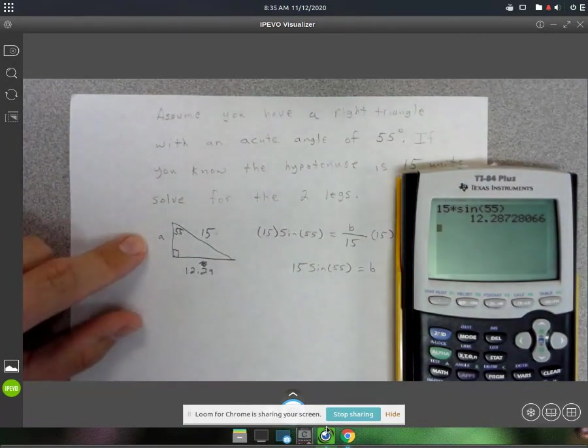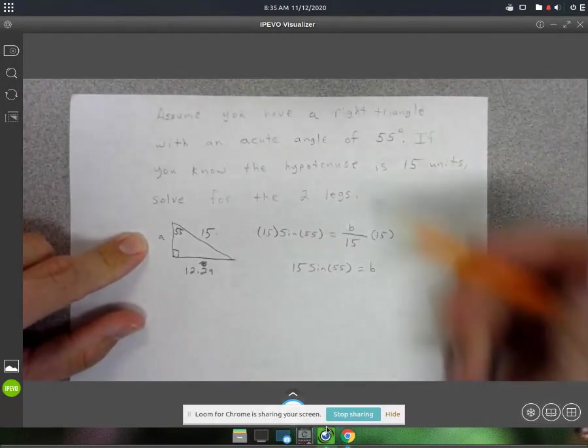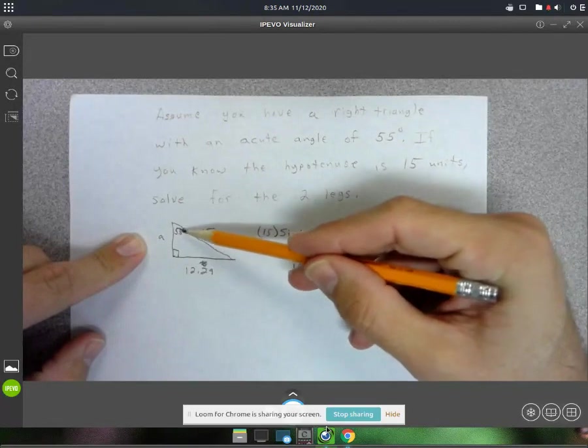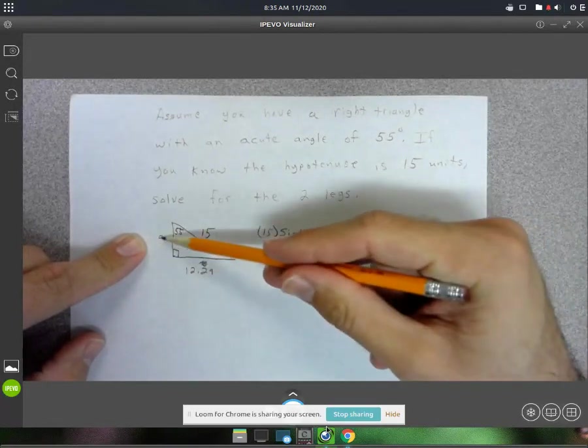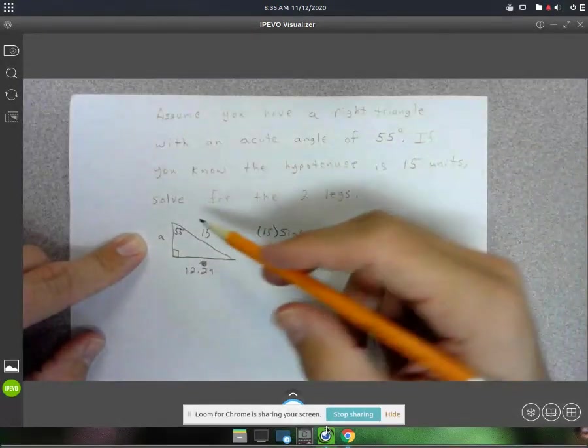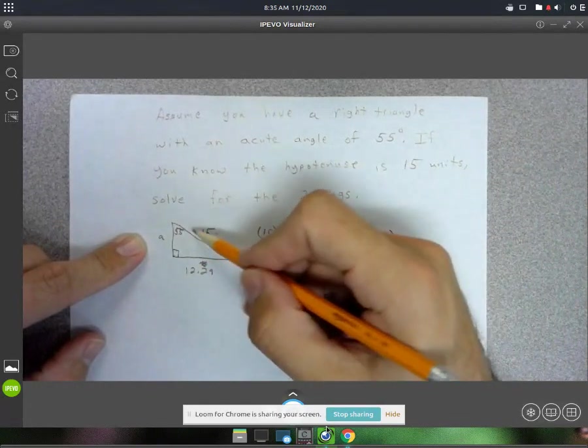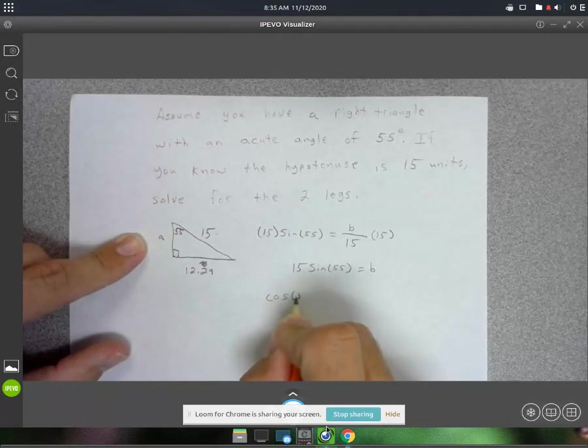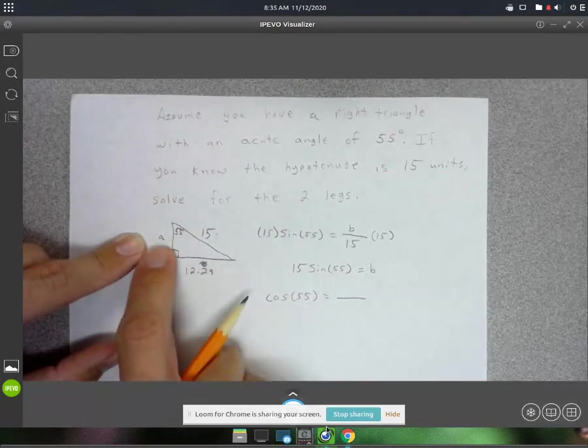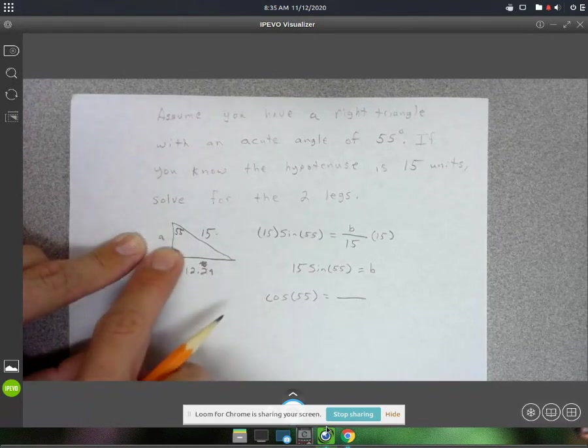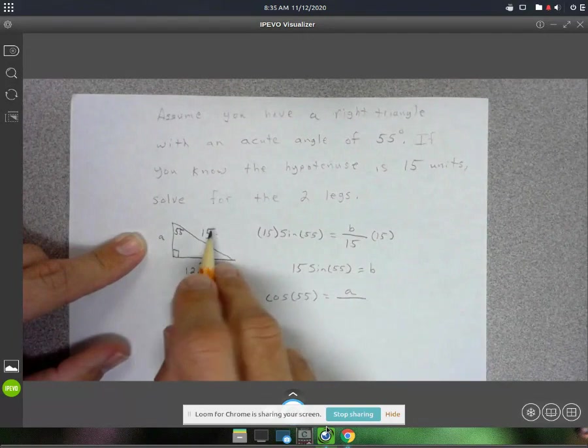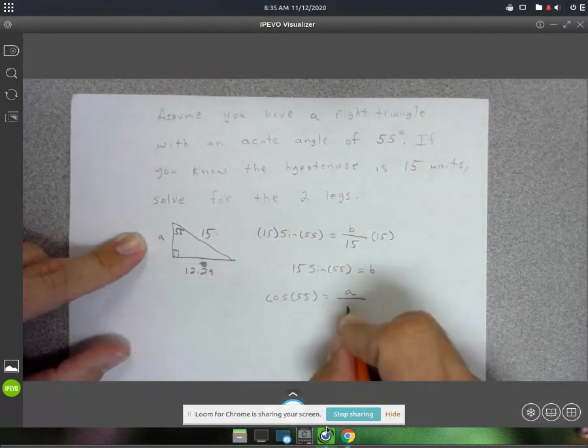Alright, and then for solving for A, at this point I can either use tangent of 55—tangent would be this one over this one—or I could use cosine of 55. I'll use that one, actually. So cosine of 55, that's going to be adjacent, which is the side that's connected to the 55 degrees. So that's A over the hypotenuse. Cosine is adjacent over hypotenuse.